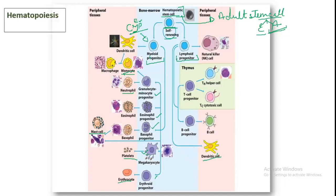Looking at the blue portion of the diagram, we can see that most blood cells are formed in bone marrow, which is the primary lymphoid organ. B cells develop in bone marrow — the 'B' comes from bursa of Fabricius, but in humans this function is performed by bone marrow. T cells mature in the thymus, and the 'T' comes from thymus.